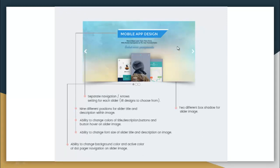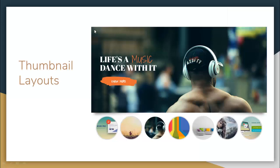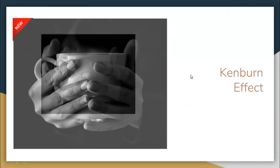You can have separate navigation arrows, as shown here, with 18 designs to choose from. There are nine different positions for slider title and description within images, and you can change the color of the title, description, buttons, button hover, and font size. You can also change background color, active color, and dot page navigation on slider images, plus two different box shadow options for slider images.